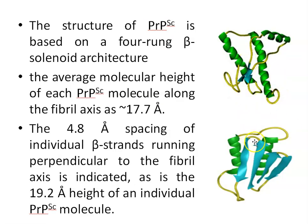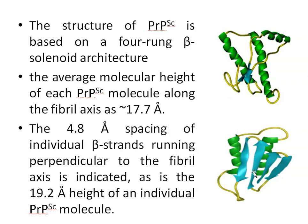Now, looking at these two figures: the first shows the structure of the normal PRPC form and the second shows the disease-causing PRPSC form, so you can compare both structures and see how it looks after conversion. The structure of PRPSC is based on a four-rung beta-solenoid architecture with four beta sheets. The average molecular height of each PRPSC molecule along the fibril axis is approximately 17.7 angstroms, with 4.8 angstrom spacing of individual beta strands running perpendicular to the fibril axis, and an individual PRPSC molecule height of 19.2 angstroms.